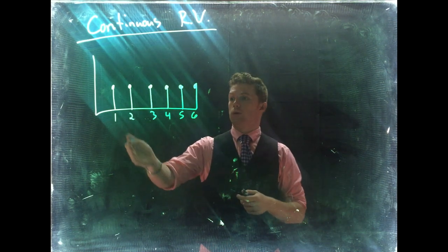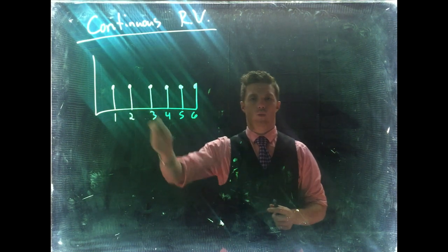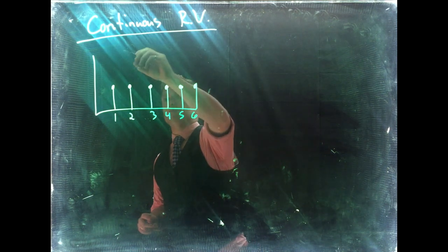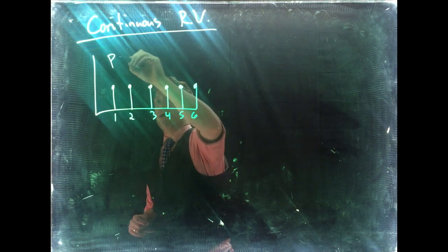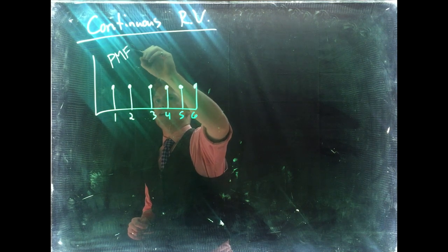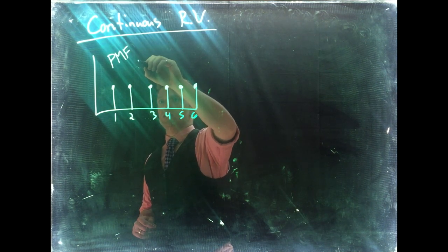Alright this was discrete. We could have a one, we could roll a two, but we couldn't roll like a one and a half. So this would be a probability mass function of our discrete uniform.